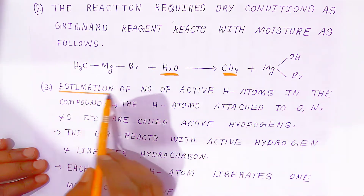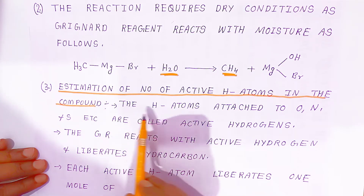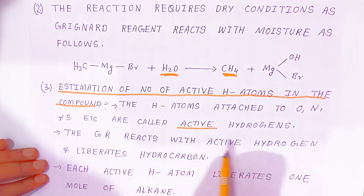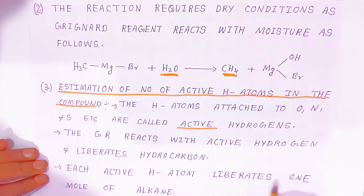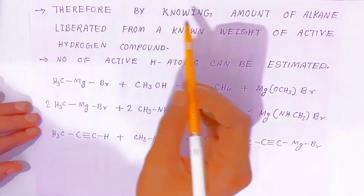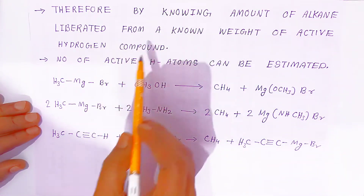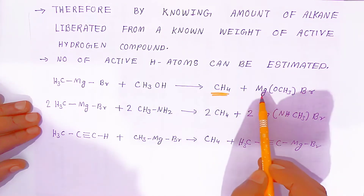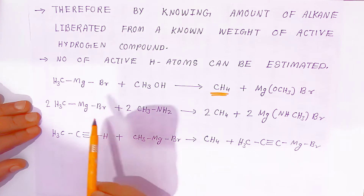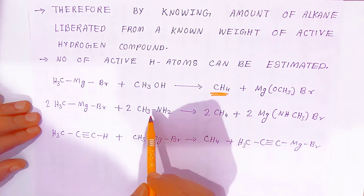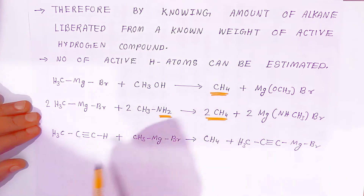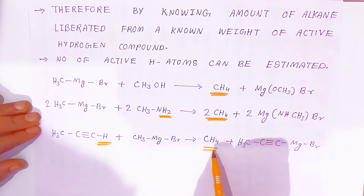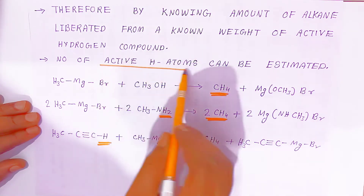Grignard reagent is also used for estimation of the number of active hydrogen atoms in a compound. Hydrogen atoms attached to oxygen, nitrogen, sulphur, etc. are called active hydrogen. The Grignard reagent reacts with active hydrogen and liberates hydrocarbons — each active hydrogen atom liberates one mole of alkane. By knowing the amount of alkane liberated from a known weight of the active hydrogen compound, the number of active hydrogen atoms can be estimated. For example, methyl magnesium bromide with methanol gives one methane molecule; with methylamine (two active hydrogens), two moles of methane are liberated; and with a compound having one active hydrogen, only one mole of alkane is produced.